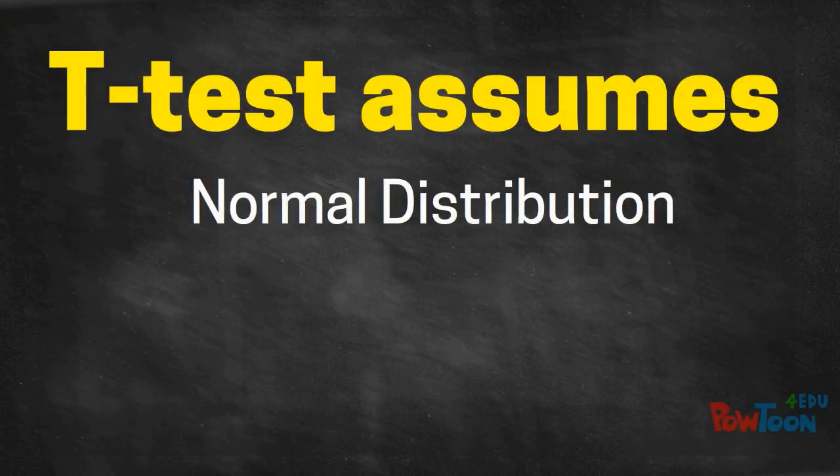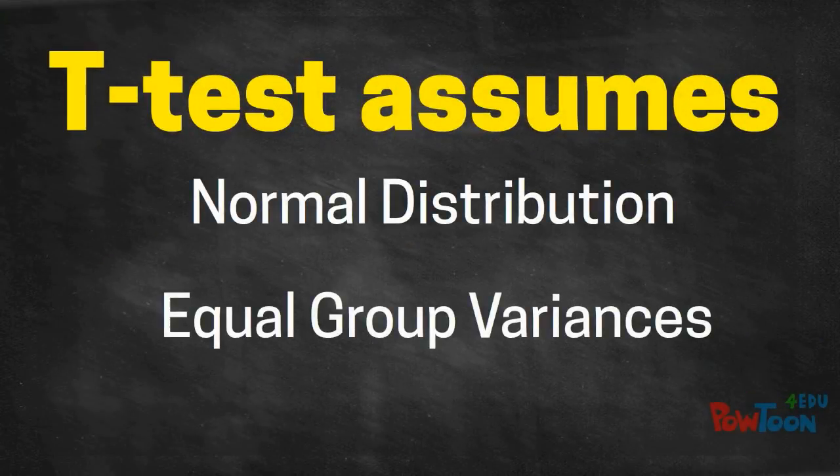The t-test assumes the data follows a normal distribution and the variances of the two groups of data to be equal.